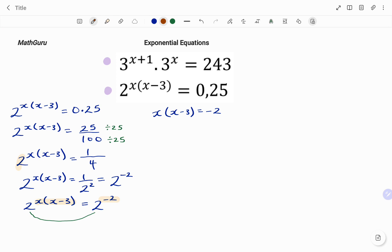The next step is to solve for x. And I'll start by expanding my left hand side. I have x times x, x squared, minus 3 times x. That's 3x equals to negative 2.